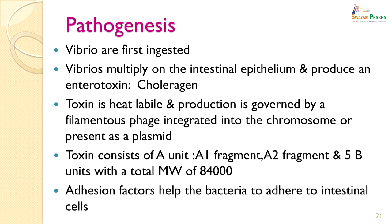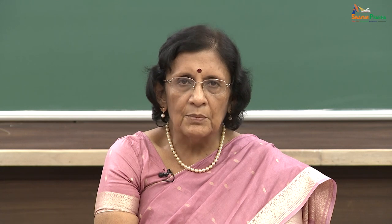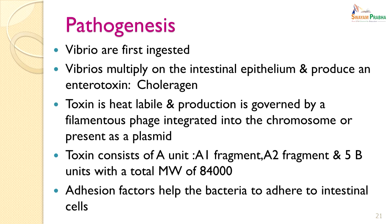If the toxin gene is present as a plasmid, it can be easily transmitted from one Vibrio cholerae to another non-pathogenic organism, which then becomes pathogenic because it starts producing the toxin. The toxin consists of an A unit — which has two fragments A1 and A2 — and a B unit which has five fragments. The total molecular weight of the toxin is 84,000. An adhesion factor helps the bacteria adhere to the intestinal cells.